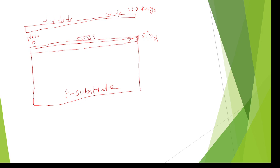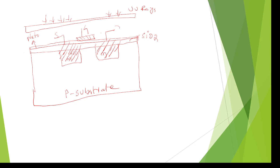In the next step, diffuse electrons into the p-substrate by heating — these are the electrons diffused in. Now we can see the source, gate, and drain terminals. Like this, we can design our required transistor — either a PMOS or NMOS.